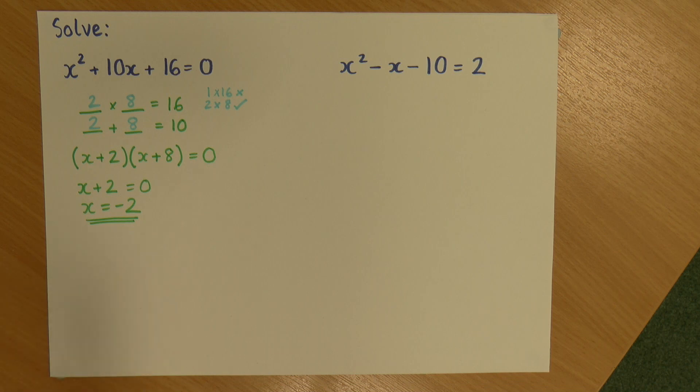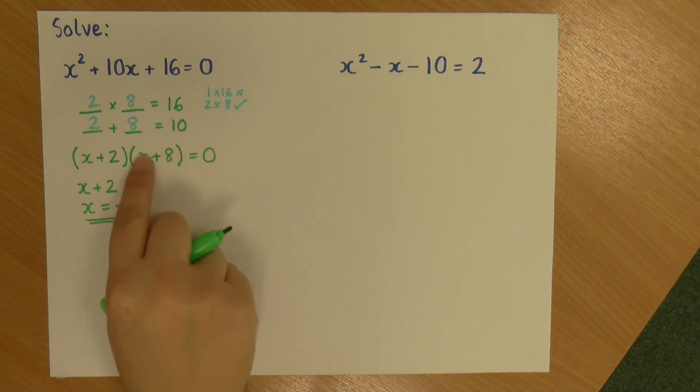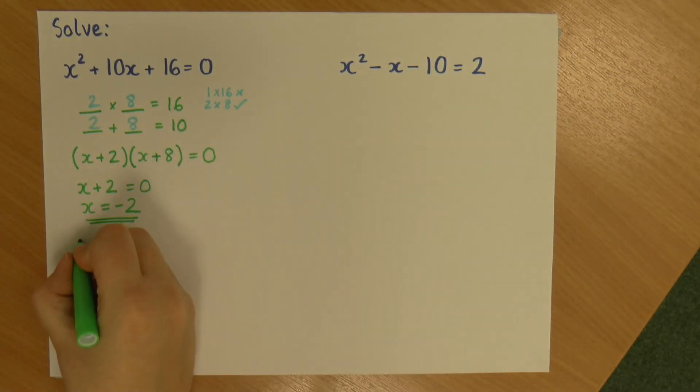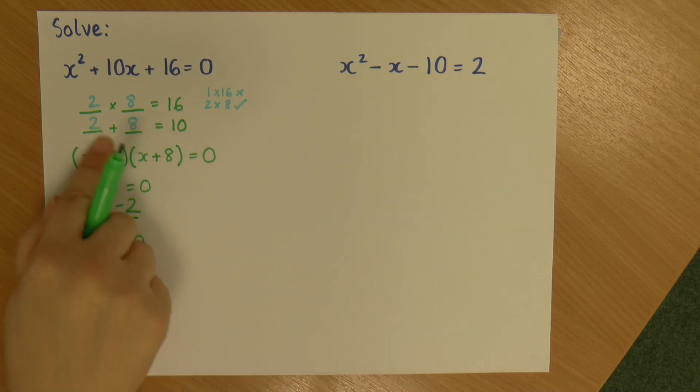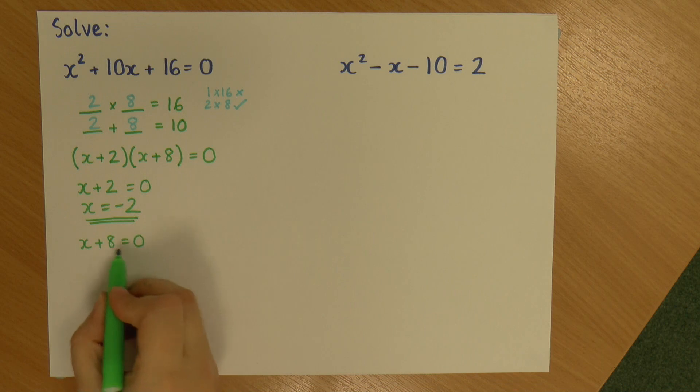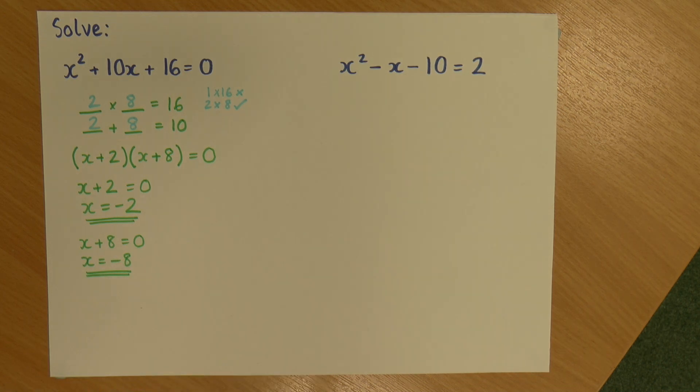So now, I do the other one, the other value for x. So this time, I'm setting my second equation equal to 0. So I've got whatever this is times 0, giving me 0. And again, rearrange it to give me minus 8.